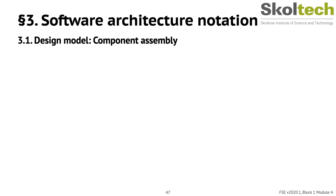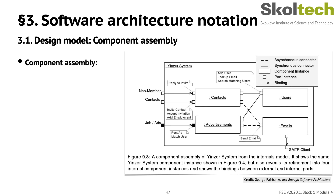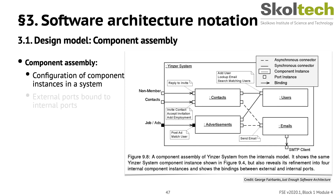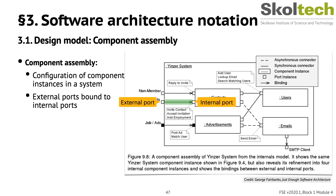Returning to the job advertisement system, a component assembly diagram shows a specific configuration of component instances. You have already seen one special case of a component assembly: the system context diagram. The component assembly diagram shows bindings between the external parts of the system and internal ports. A binding between an internal port and an external port means interactions with the external port are handled by the internal port — it is not a connector, no work is done there, but it's shown for clarity.